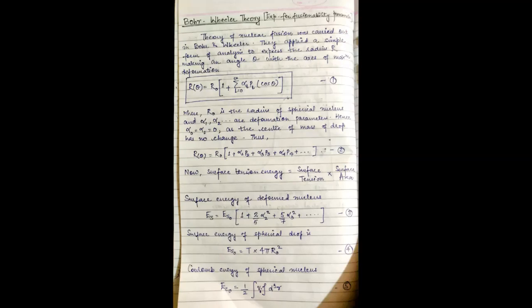applied a simple form of analysis to express the radius capital R, which makes an angle theta with the axis of maximum deformation. They expressed it in terms of the Legendre polynomial as R theta equals R naught times 1 plus summation L equals 0 to infinity alpha L P L cos theta, where R naught is the radius of the undeformed spherical drop, alpha L is the deformation parameter, and P L cos theta is the Legendre polynomial.